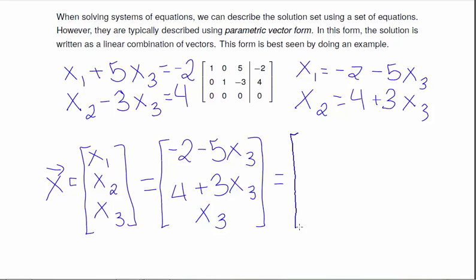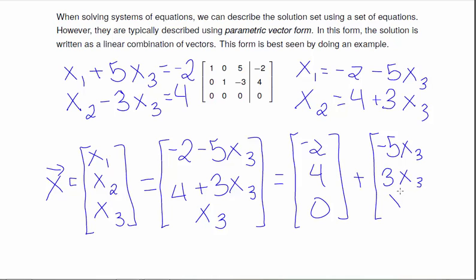We can break this up the opposite of vector addition. I'm going to break it up to constant values: negative 2, 4, and 0, and then things with an x3 in them: minus 5x3, 3x3, and x3.